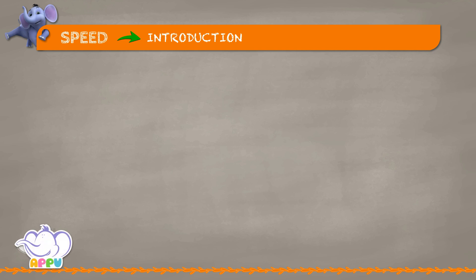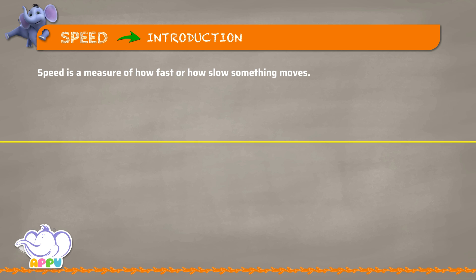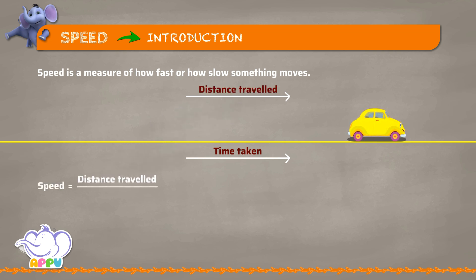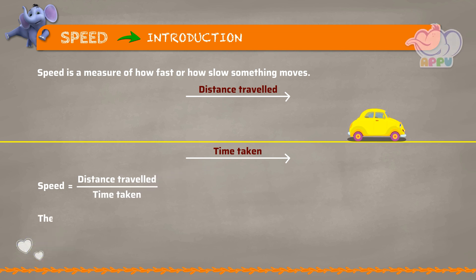Speed introduction. Speed is a measure of how fast or how slow something moves. Speed can be calculated using the formula: speed equals distance traveled divided by time taken. The unit of speed is meters per second, kilometers per hour, and so on.